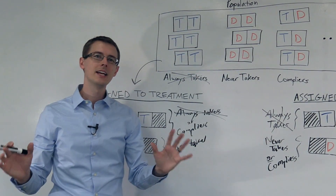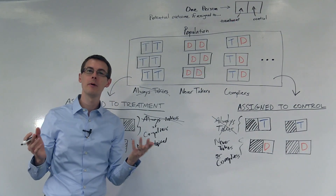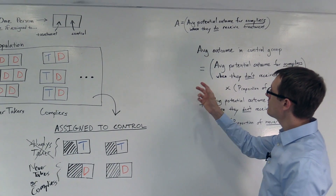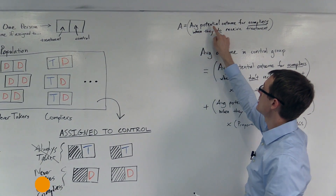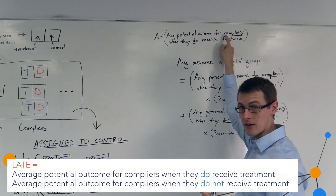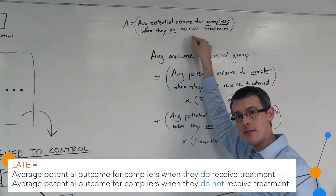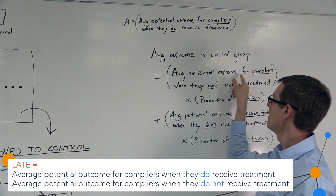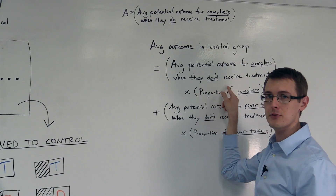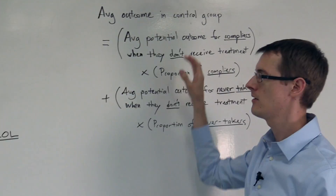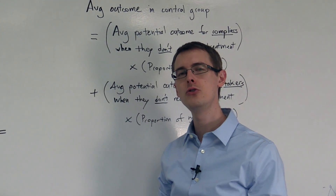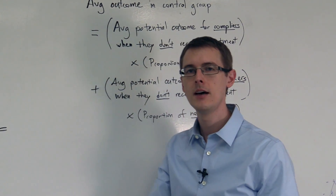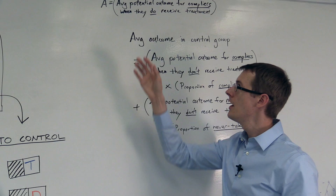So let's see how we get the local average treatment effect. Remember how it's defined: the local average treatment effect is the difference between the average potential outcome of compliers when they do receive treatment, minus the average potential outcome for compliers when they don't receive treatment. It's just the difference of those two averages for compliers — the potential outcome when they receive treatment minus the potential outcome when they don't.